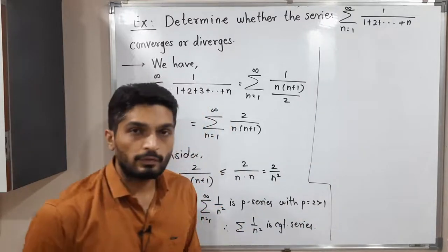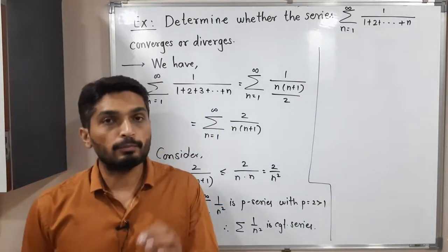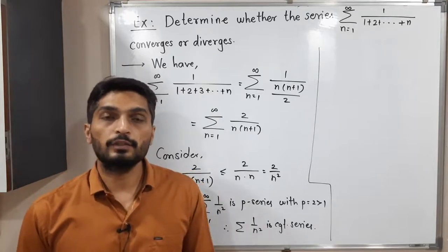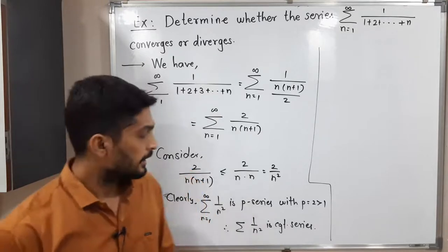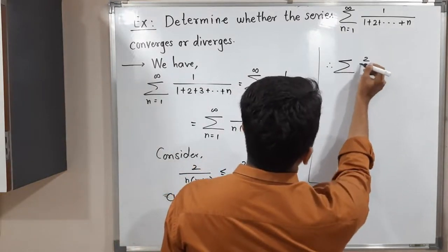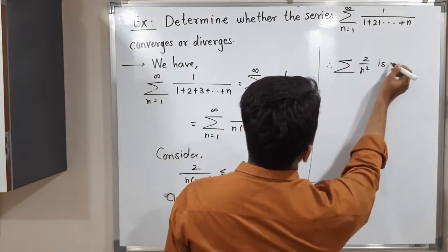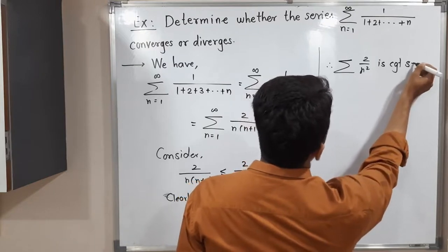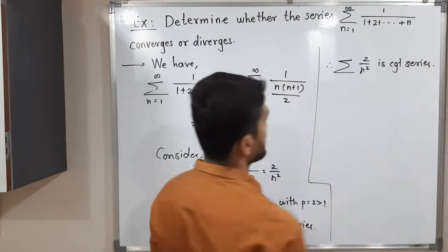When you have any convergent series and multiply by any constant, you will again have a convergent series. So I will multiply it by 2. Therefore summation 2/n² is also a convergent series.